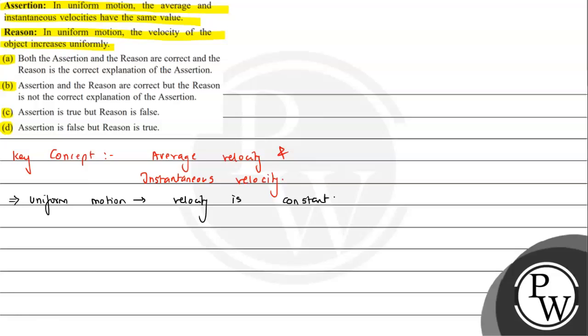We can straight away discard the reason. The reason states that in uniform motion the velocity of the object increases uniformly — this is incorrect. In uniform motion, velocity is constant, not increasing.